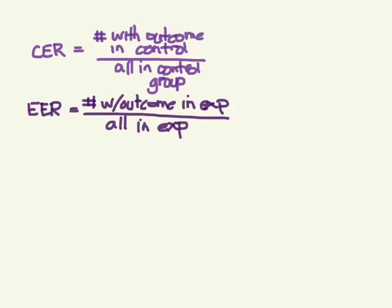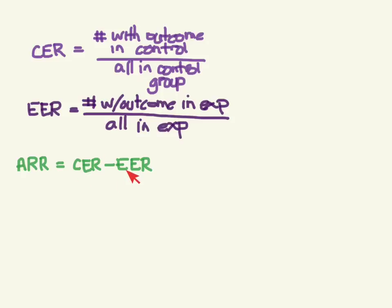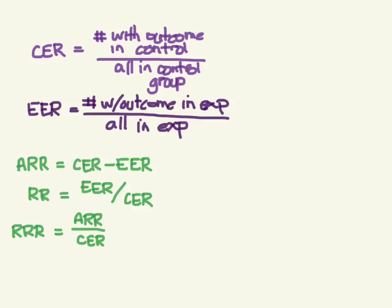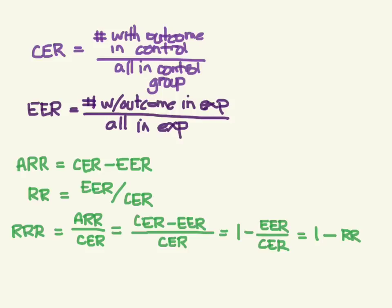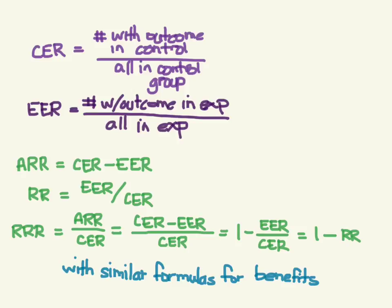To summarize the statistics covered: the control event rate is outcomes in the control group over all control patients; the experimental event rate is the same for the experimental group. Absolute risk reduction = CER minus EER. Relative risk = EER / CER. Relative risk reduction = absolute risk reduction / CER, which also equals 1 minus the relative risk. Similar formulas apply for benefit increases. Next we'll look at how to apply this to your patient.